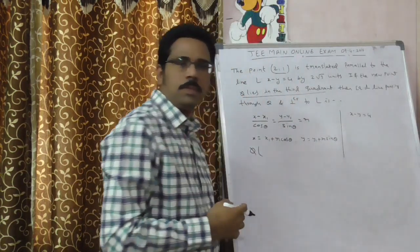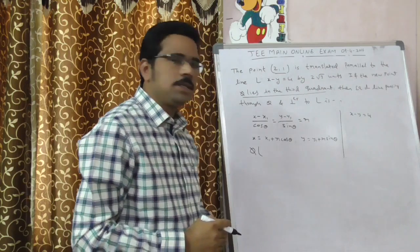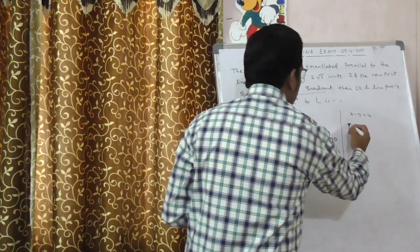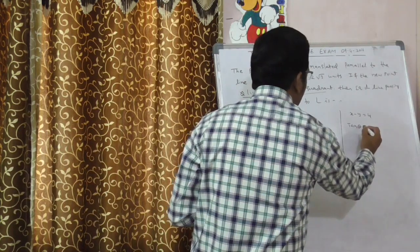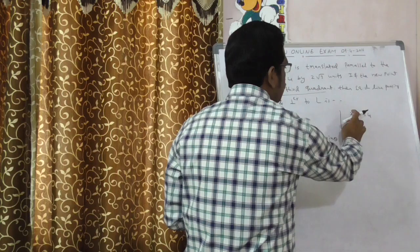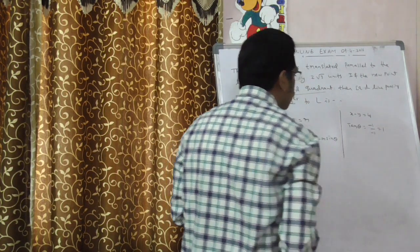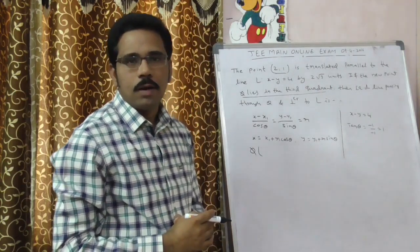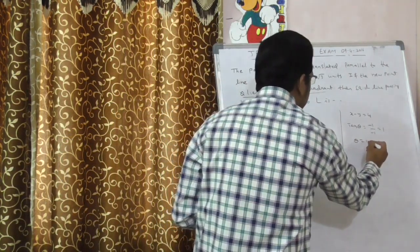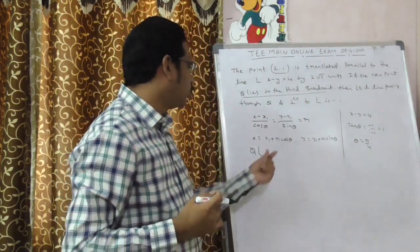What is the given line here? That is x minus y is equal to 4. By observing given straight line, you can write slope of that line. What is slope of the line? The slope of the line can be represented by tan theta. Tan theta is minus x coefficient by y coefficient. This is minus 1 by minus 1, that is equal to 1. If tan theta is equal to 1, what is theta? Theta is equal to pi by 4.